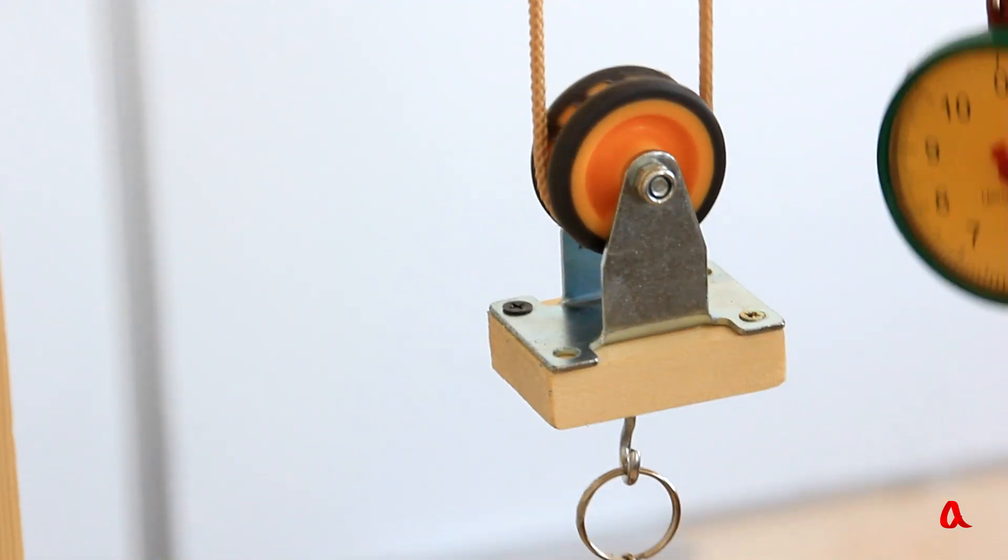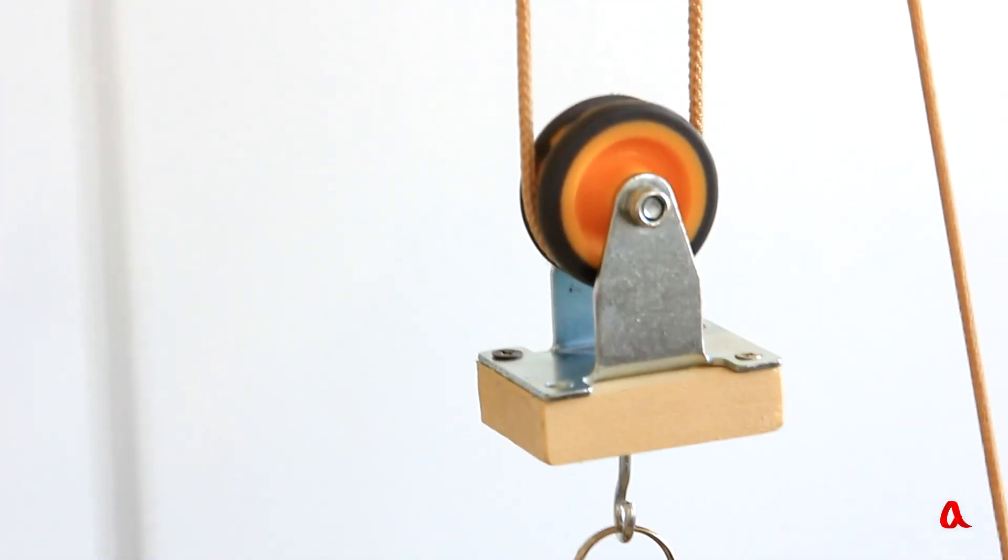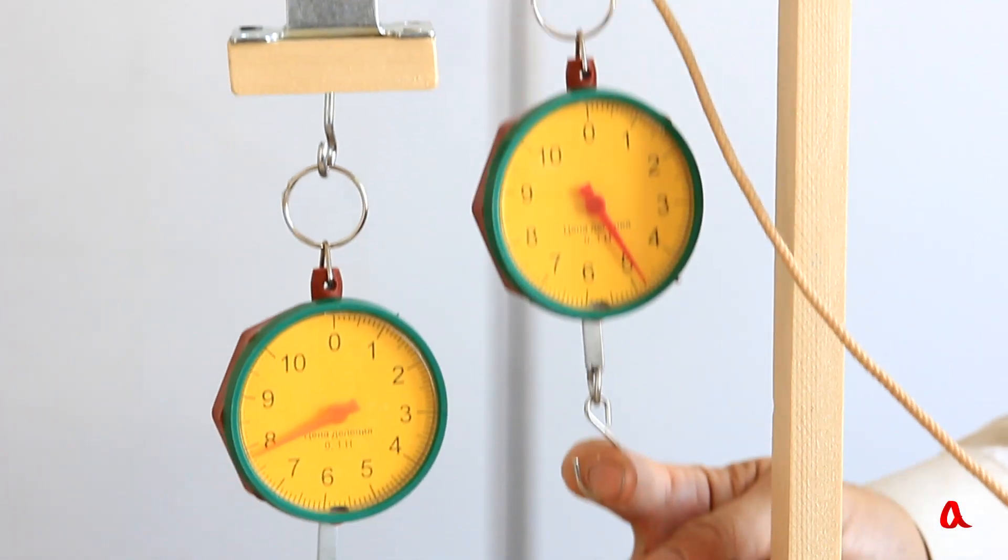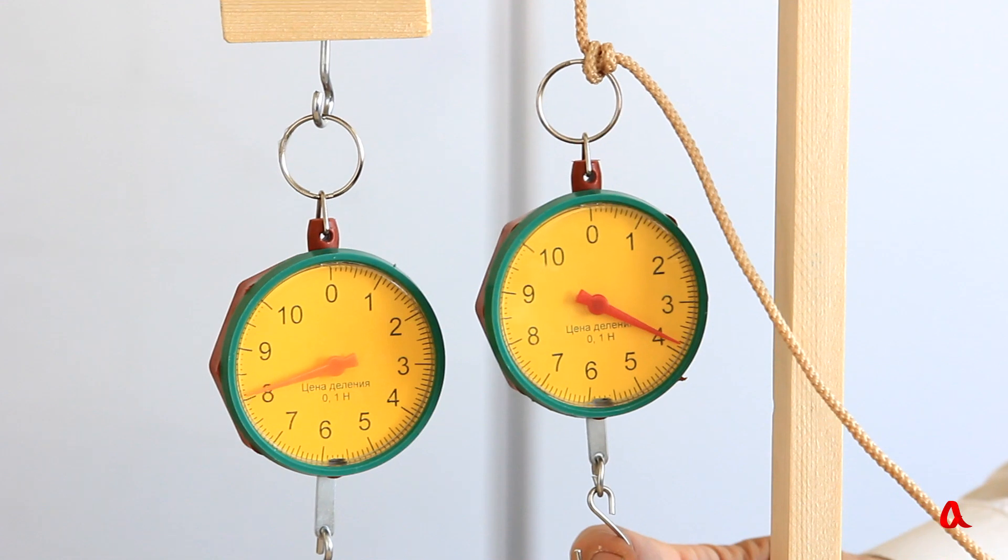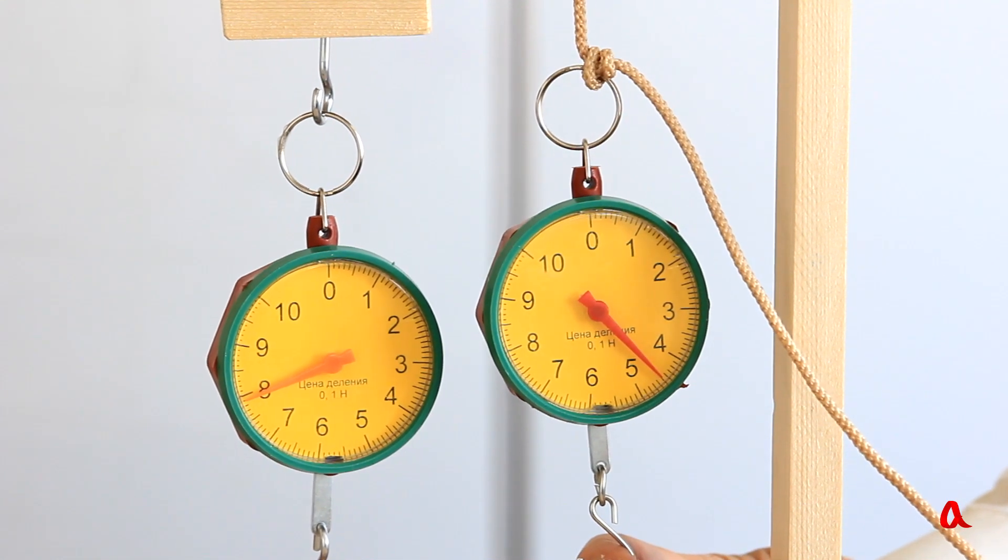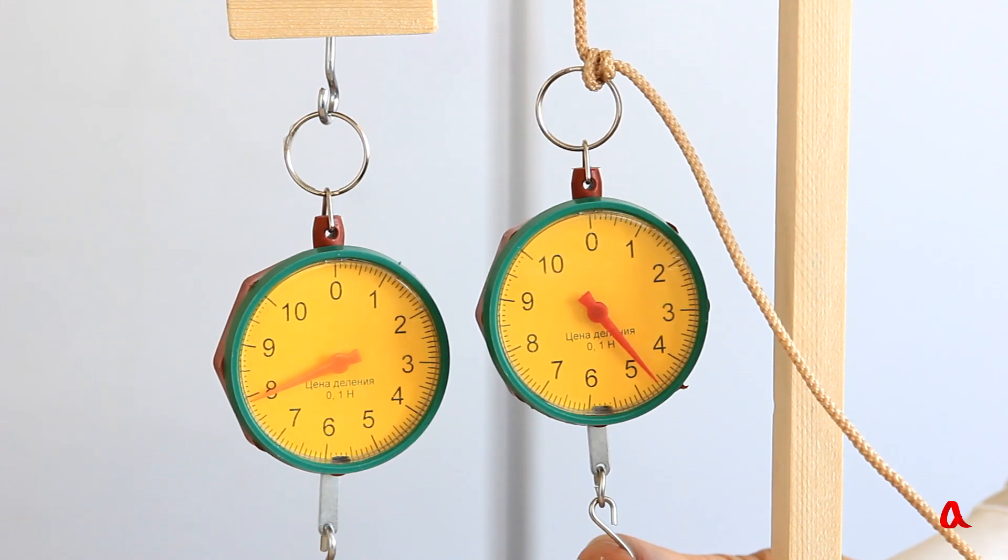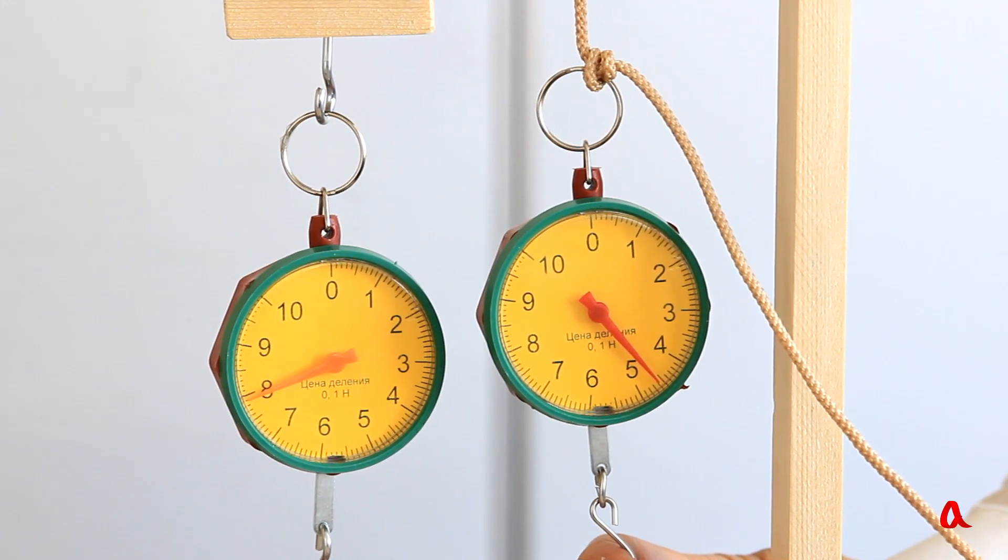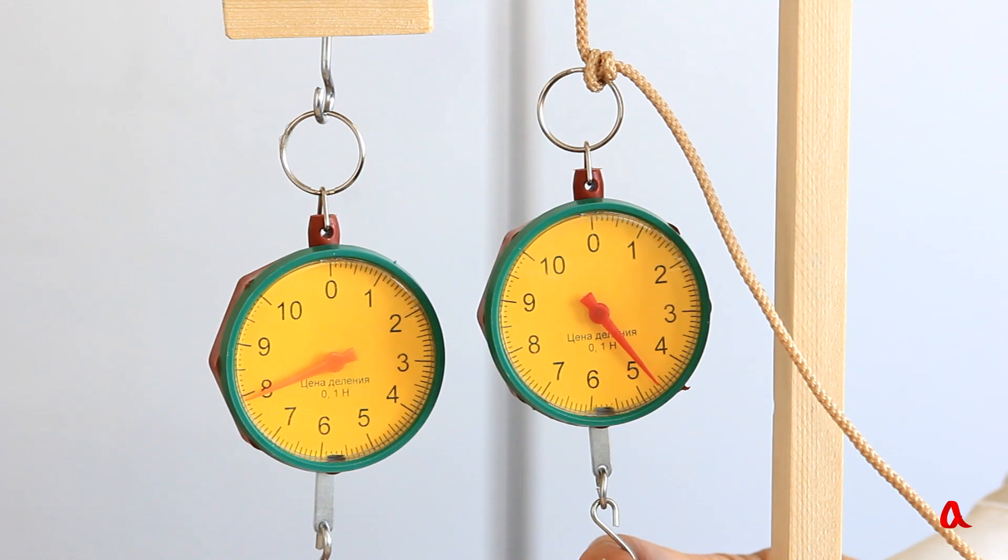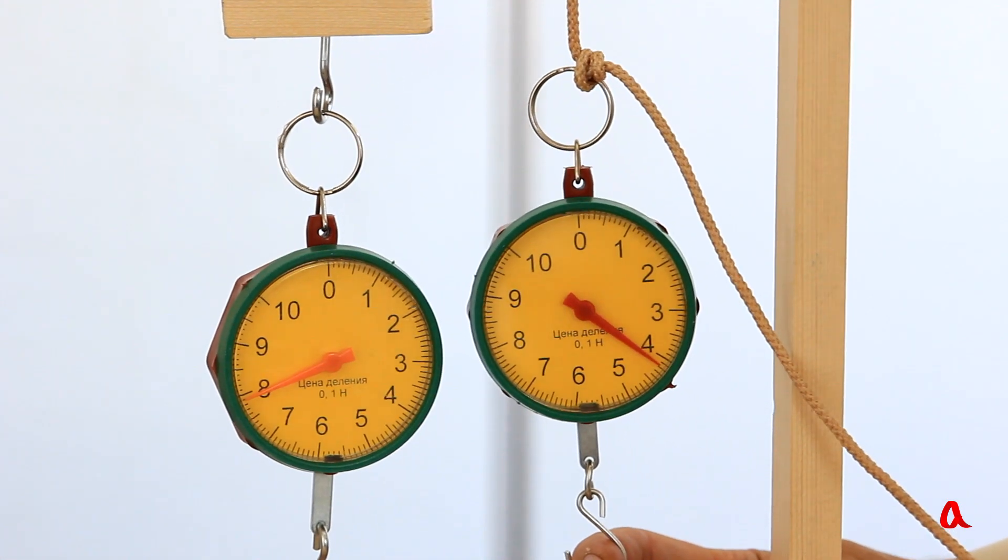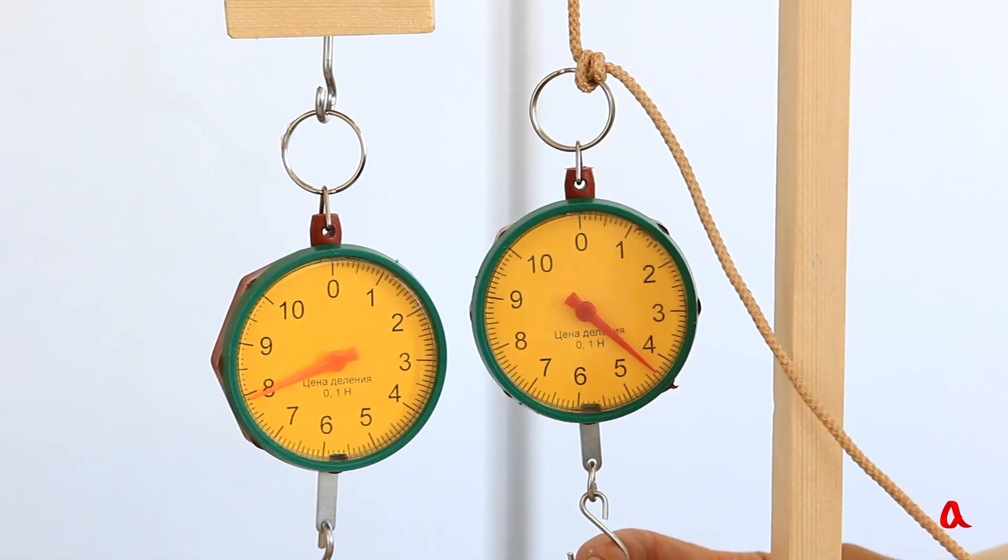The lower one, however, is movable and it does provide such an advantage. Let's have a look at the dynamometers. The load's weight equals 8 units and the force of pulling is slightly over 4 units. So the mechanical advantage is almost 2 units. But in theory, if the block and the rope were weightless and there were no friction, the advantage would be precisely double.